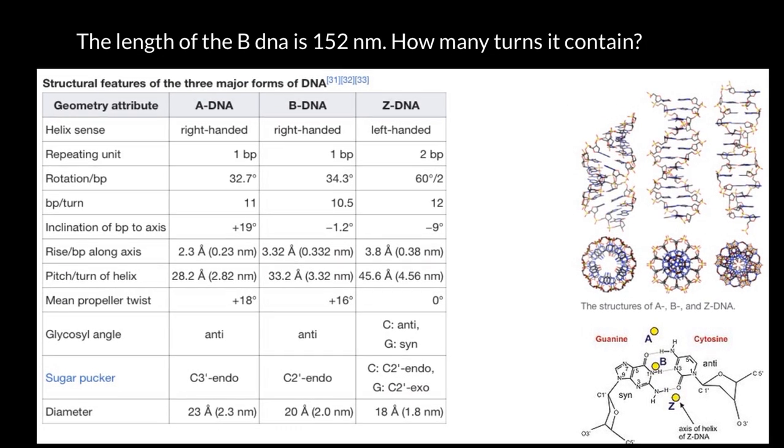For example, this table I took from Wikipedia shows on the right three conformation forms of DNA: A-DNA, B-DNA, and Z-DNA. We see here A and B-DNA would be right-handed, but Z-DNA would be left-handed, so it turns in a different direction.